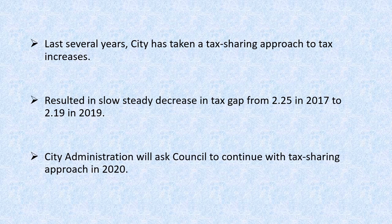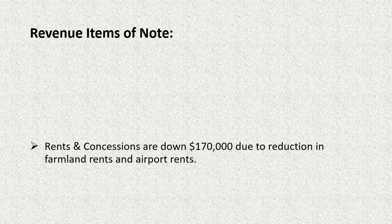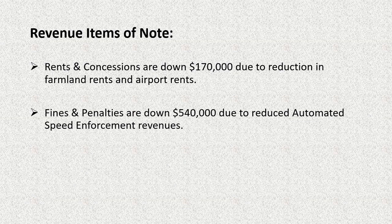I wanted to go through some items of note in terms of the revenues in the general operating budget. Rents and concessions are down about $170,000, due to a reduction in farmland rents and airport rents. As part of our southeast industrial development, there are farmlands that we will no longer be able to rent — we will be selling them — so we're seeing a reduction in our farmland rents.